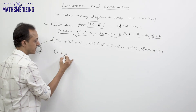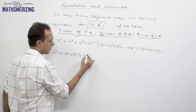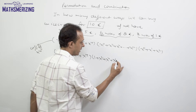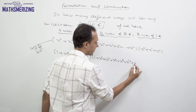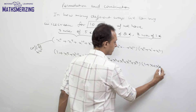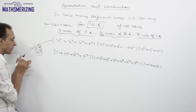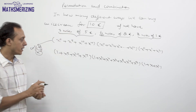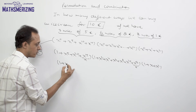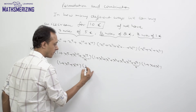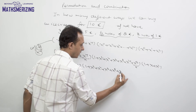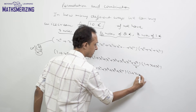I write the series as (1 + x^5 + x^10 + x^15) times (1 + x^2 + x^4 + x^6 + x^8 + x^10 + x^12) times (1 + x + x^2). Since I only need the coefficient of x^10, I ignore all terms greater than x^10 — discarding x^15 and x^12 — leaving (1 + x^5 + x^10) times (1 + x^2 + x^4 + x^6 + x^8 + x^10) times (1 + x + x^2).